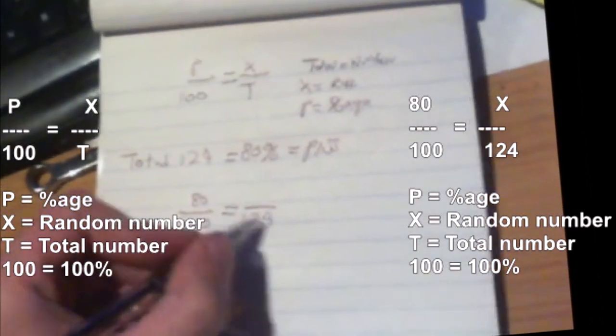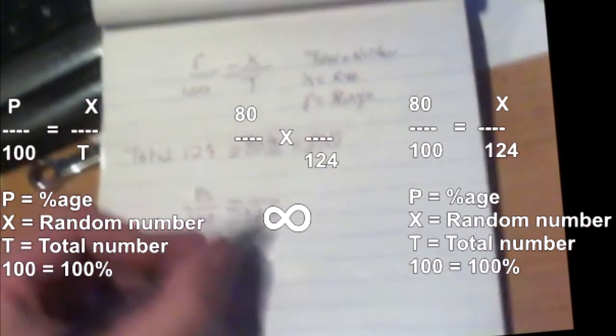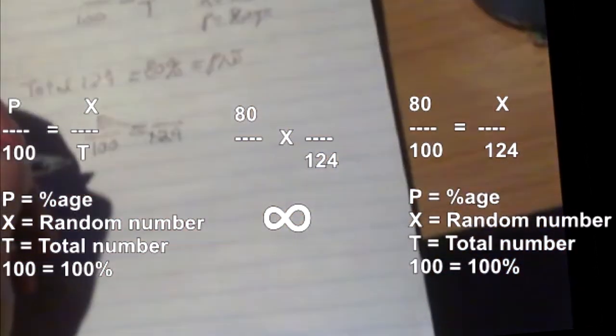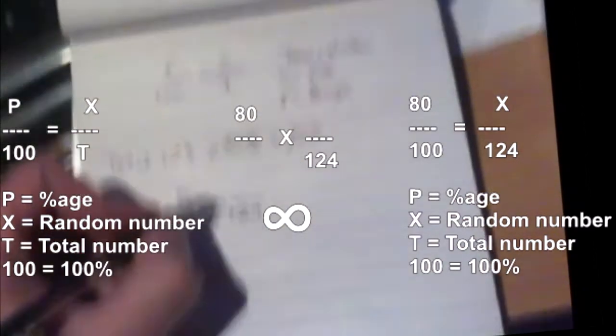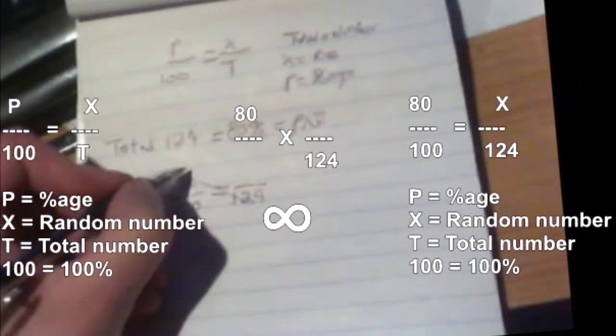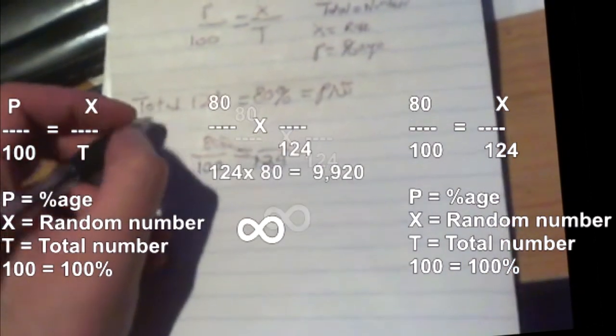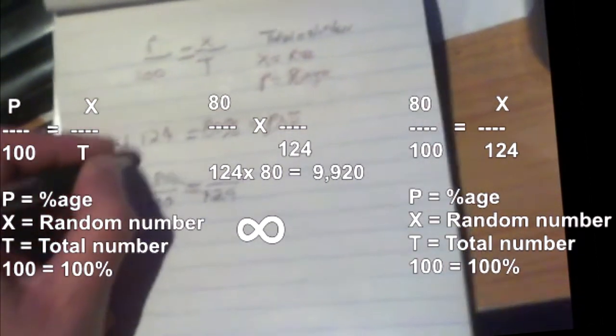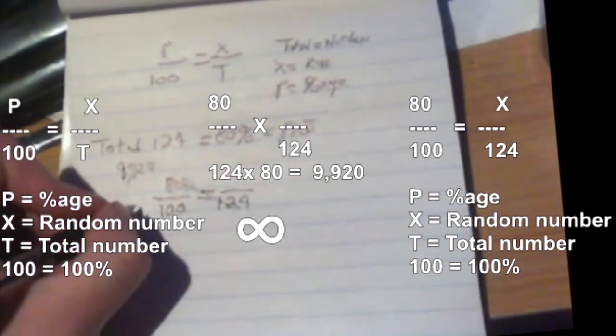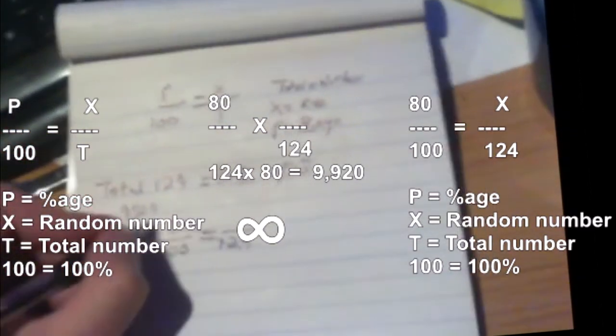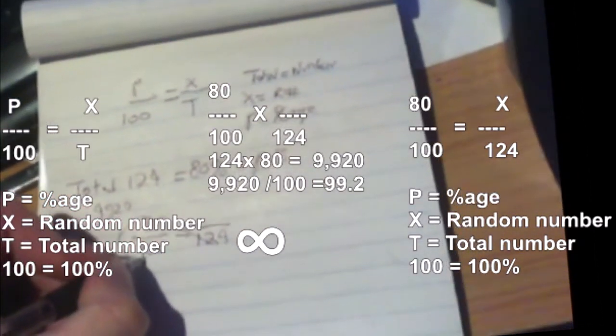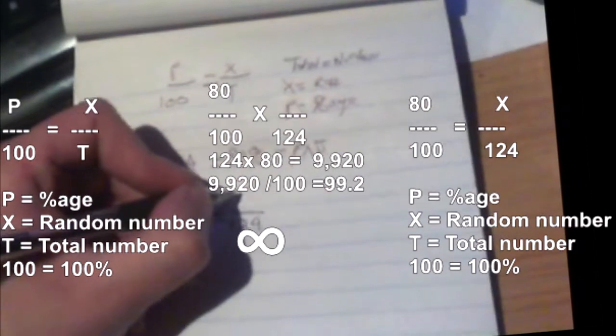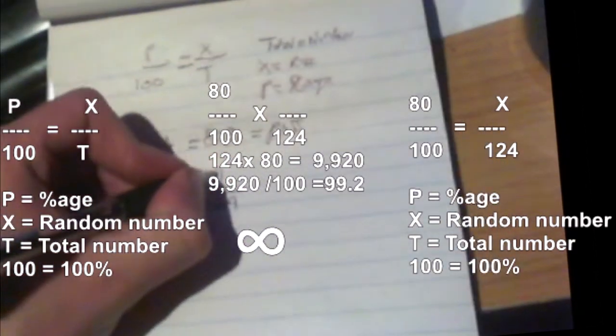The direction you go doesn't matter—right to left or left to right. But I like doing this: 80 times 124. We'll do 124 times 80, which equals 9,920. That looks crazy, right? Then you divide that by 100.